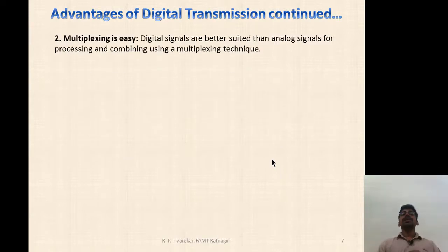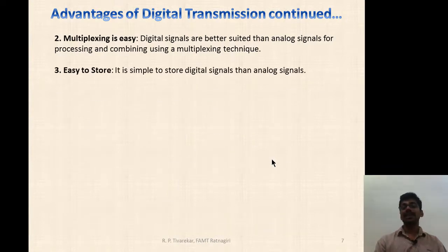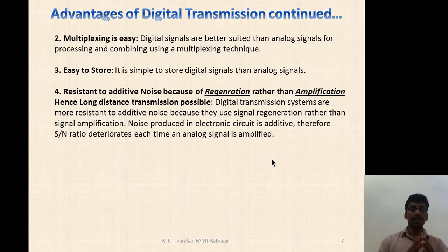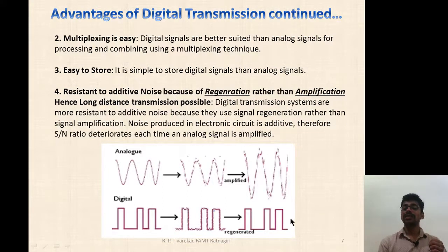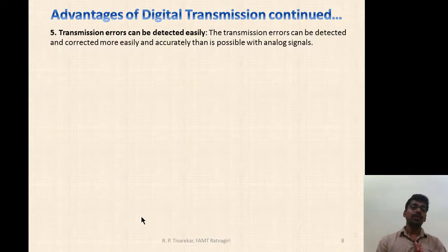The second advantage is that multiplexing becomes easy. Digital signals are better suited than analog signals for multiplexing, and multiplexing devices are also available in the digital domain. Digital signals are also easy to store compared to the analog domain. They are resistant to additive noise, so regeneration is possible instead of amplification, making long-distance transmission possible. Transmission errors can be easily detected using channel coding, error control, and error detection techniques.